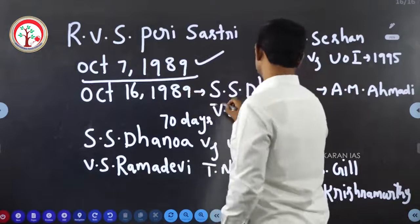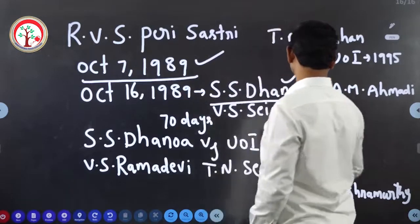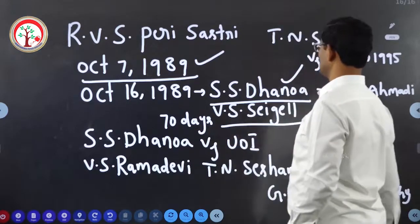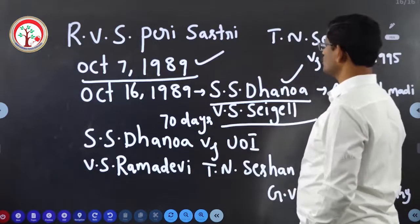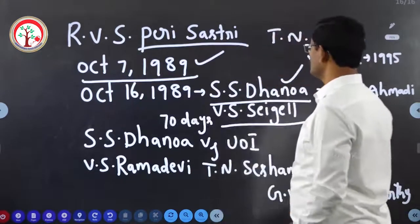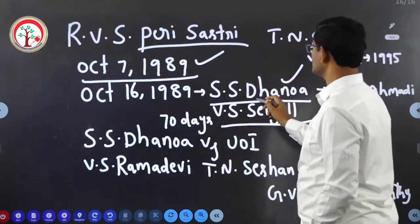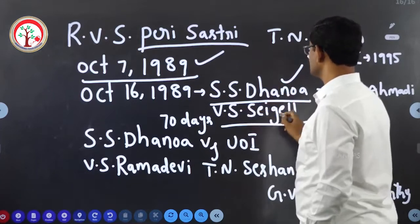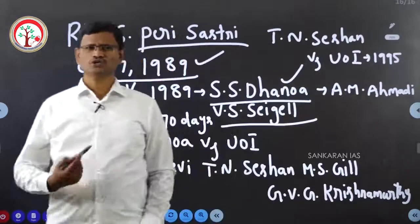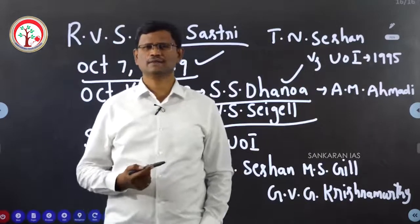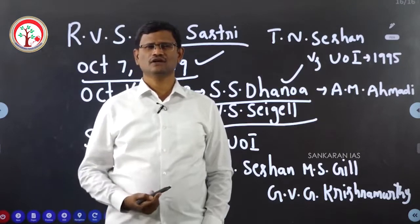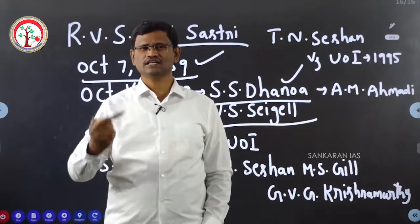The two newly appointed Election Commissioners were S.S. Dhanoa and V.S. Seigell. So Peri Shastri was the Chief Election Commissioner and the remaining two Central Election Commissioners were S.S. Dhanoa and V.S. Seigell. The Election Commission of India functioned as a multi-member body from October 16th 1989 for only 70 days.